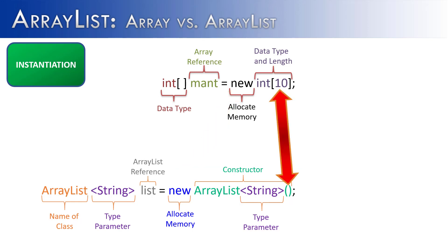Finally, we have the length of the array at the top — that is 10. Usually you don't put anything inside of the constructor of an array list. You could put the capacity there, and that would set the capacity of the array list, but it wouldn't set the size of the array list.